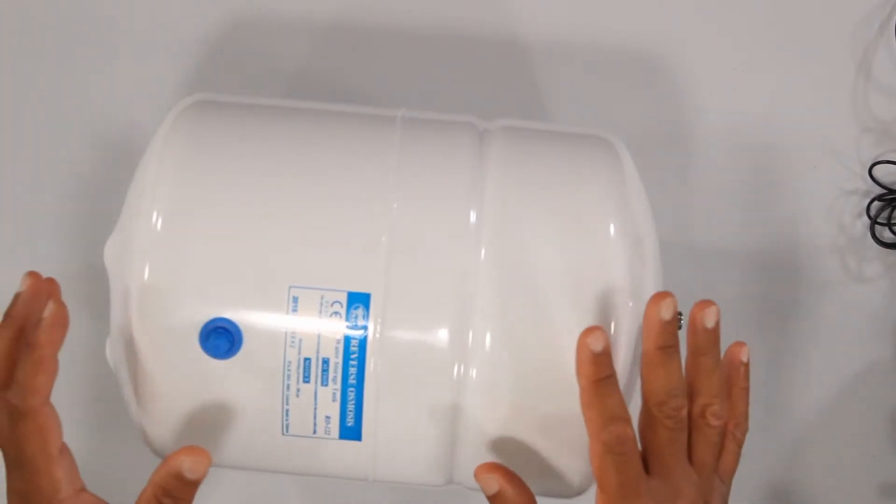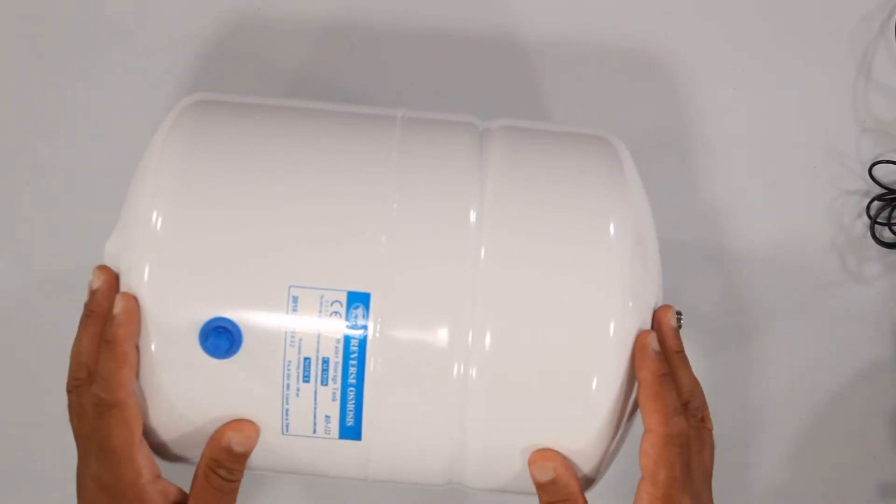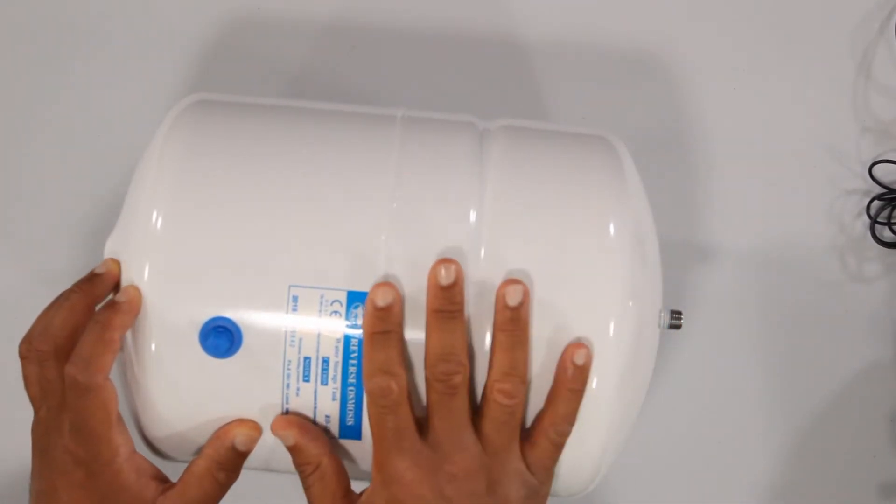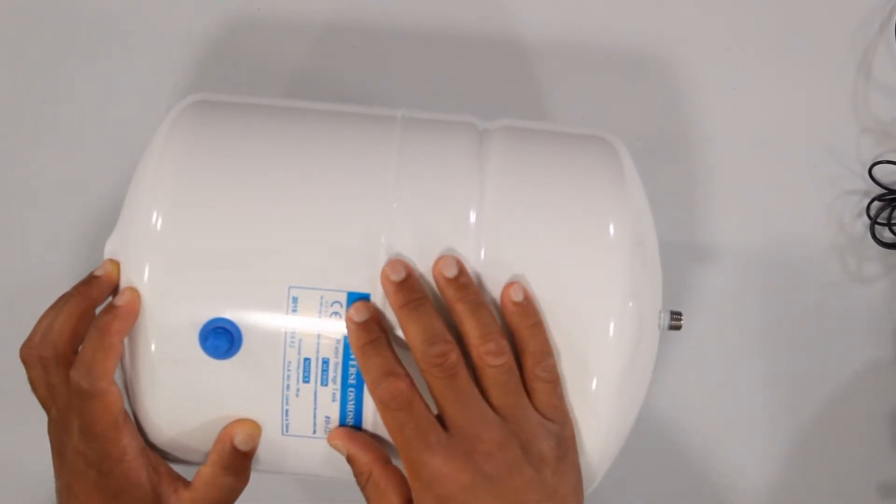Without constant pressure, you won't get water coming out of your faucet. These tanks are kind of unique. Internally, they have a rubber bladder and that bladder is what really holds the water.